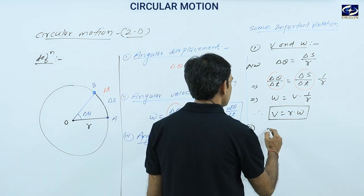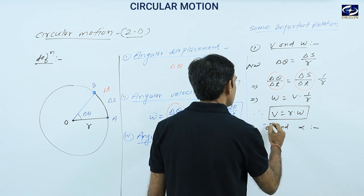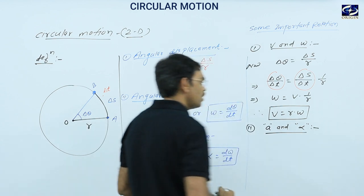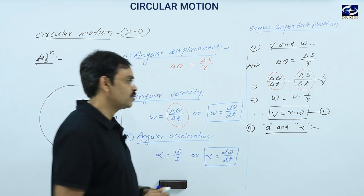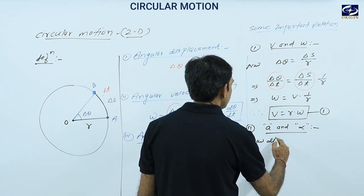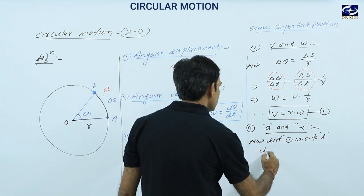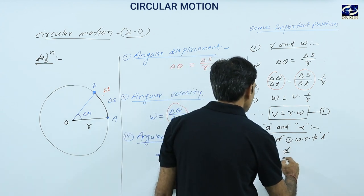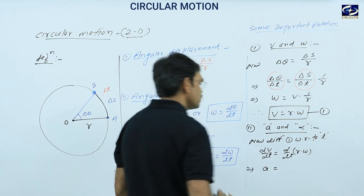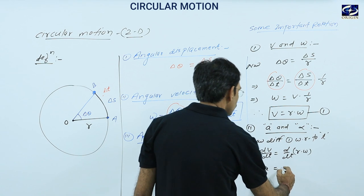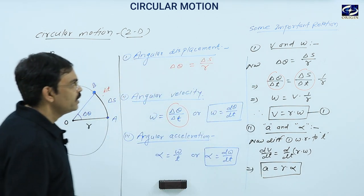The second relation is between A and alpha, where A is linear acceleration and alpha is angular acceleration. We differentiate the first relation with respect to time. DV by DT equals D by DT of R into omega. DV by DT is linear acceleration. Taking R as common outside, D omega by DT becomes alpha. Therefore A equals R into alpha. So these are the important relations between V and omega, and between A and alpha.